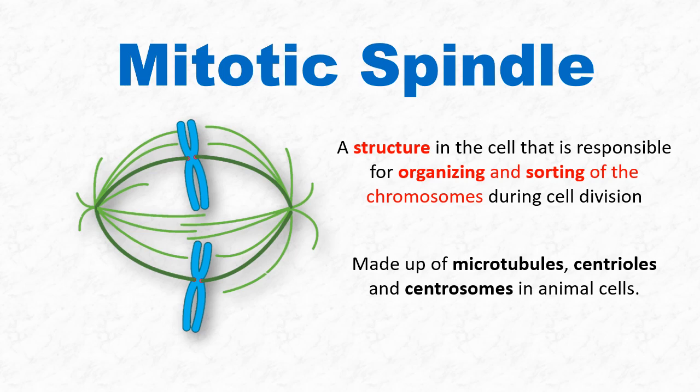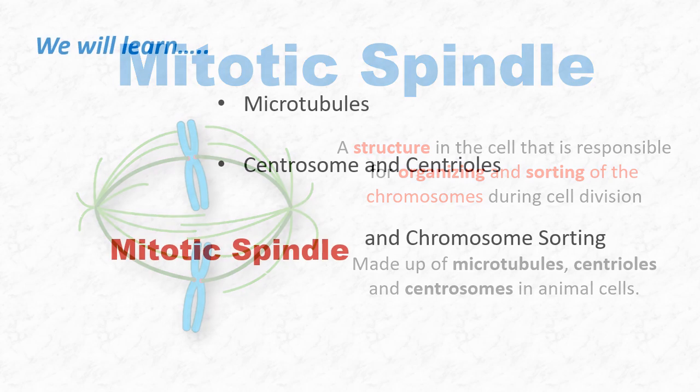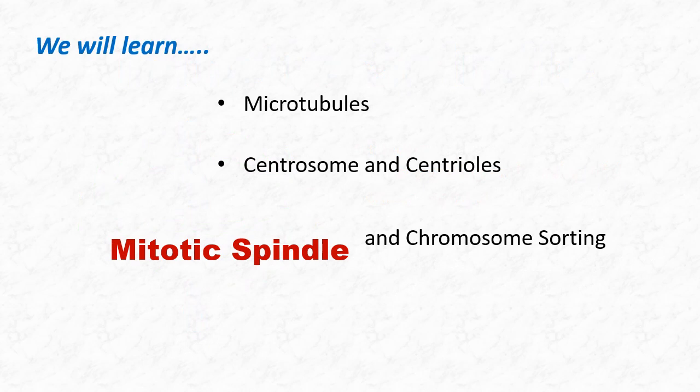It is made up of microtubules, centrioles, and centrosomes in animal cells. We will start our lecture from finding out what are microtubules, what are centrosomes and centrioles, and how they form the final structure of mitotic spindle that results in chromosome sorting during cell division. Let's begin.